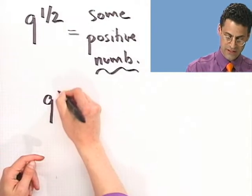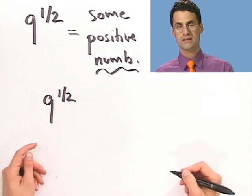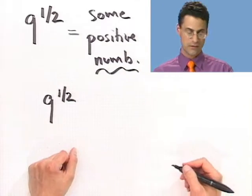Well, here's a neat way of thinking about what that should be. Let's use the other laws that we've already developed with respect to exponentiation and see if we can make a guess. For example, what if I took that number, that mystery number, that thing that we don't know what it is, and I squared it? Well, let's see what happens.